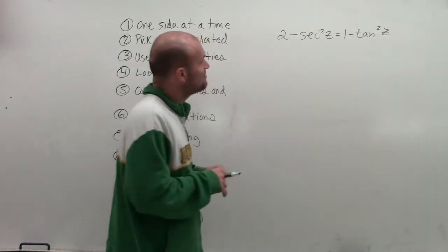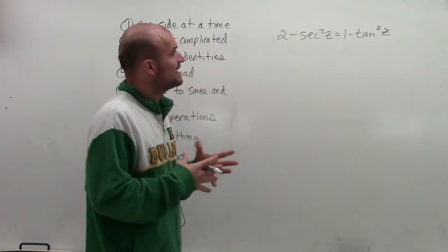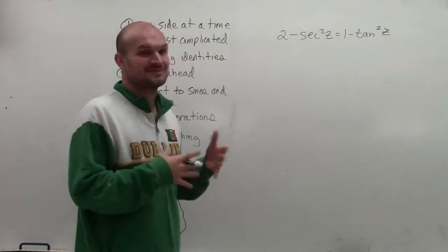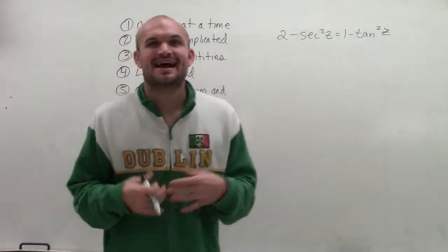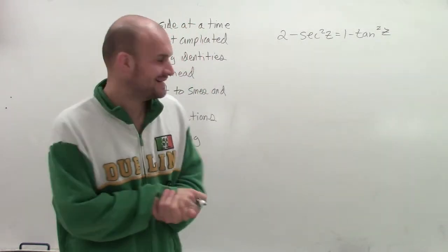Welcome. So what I have here is 2 minus secant squared of z equals 1 minus tangent squared of z. And what I want to do is I want to verify this identity.